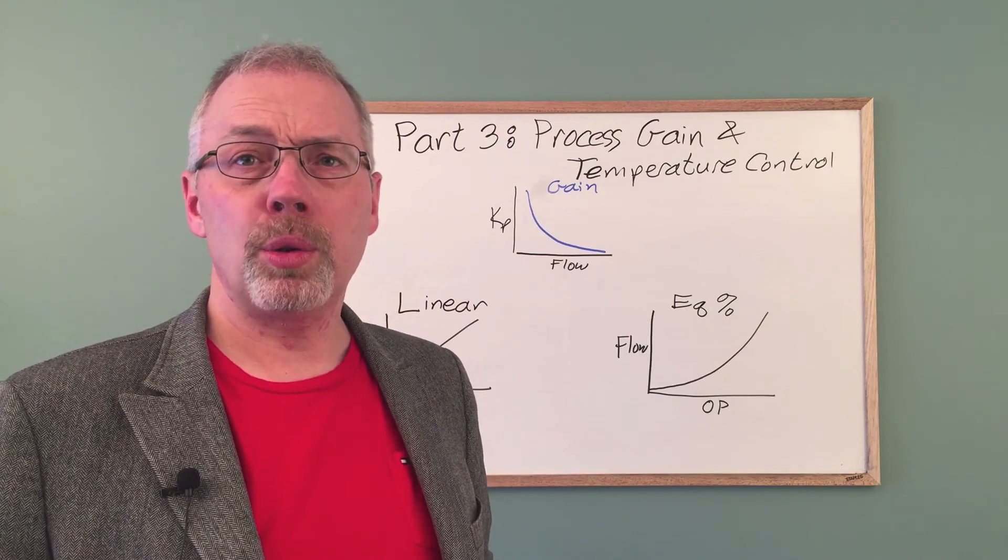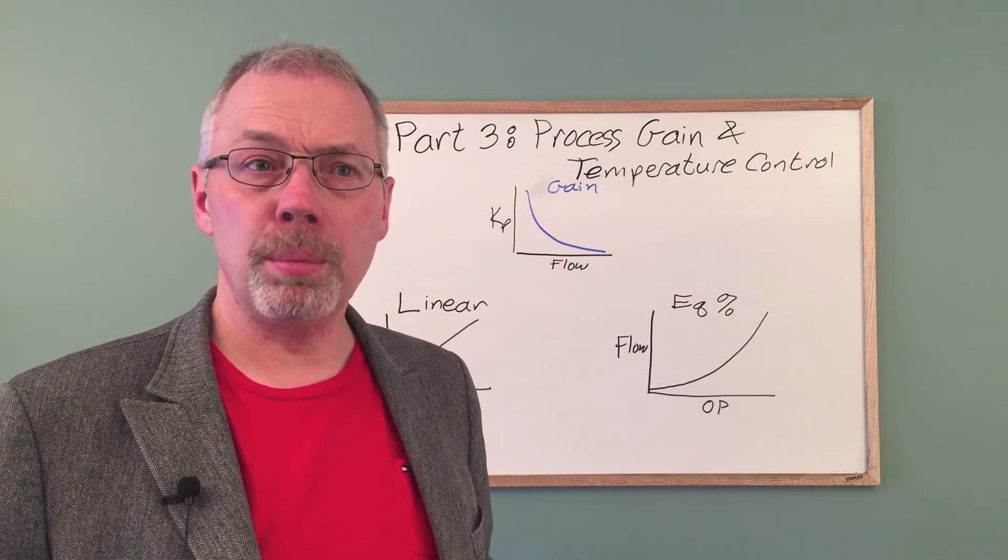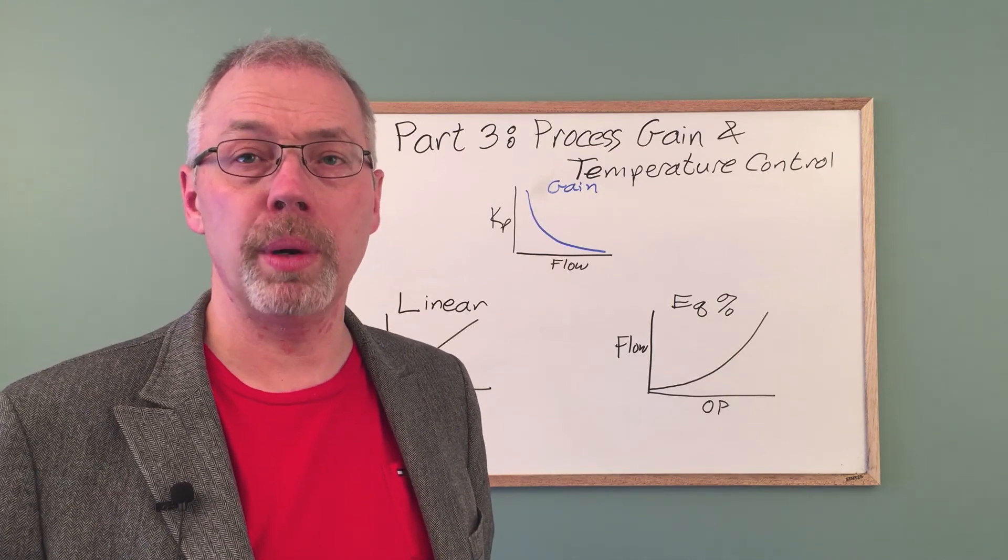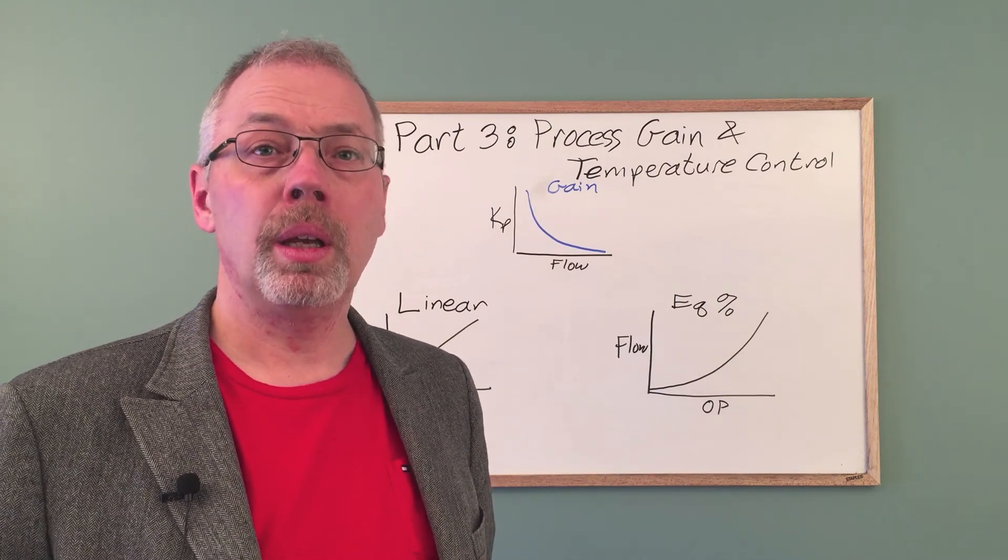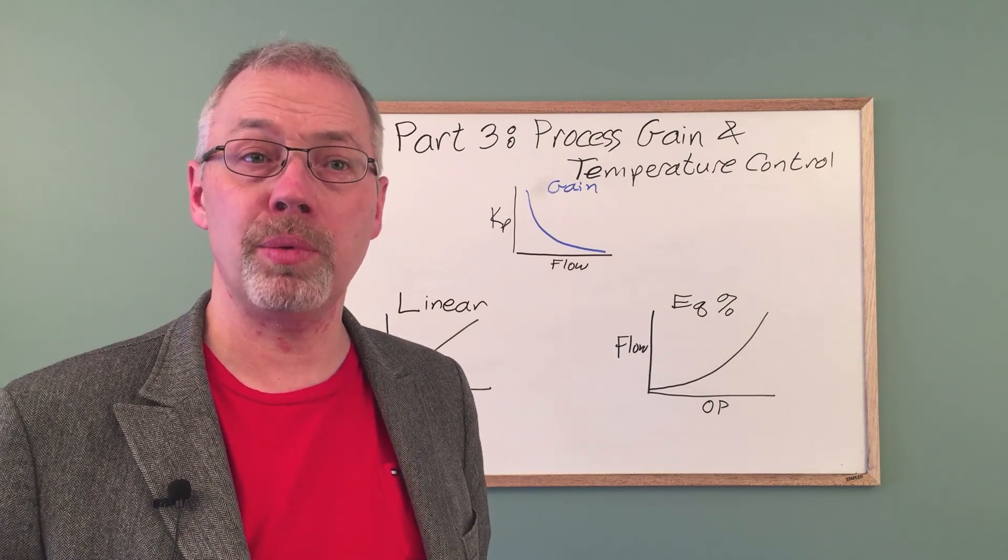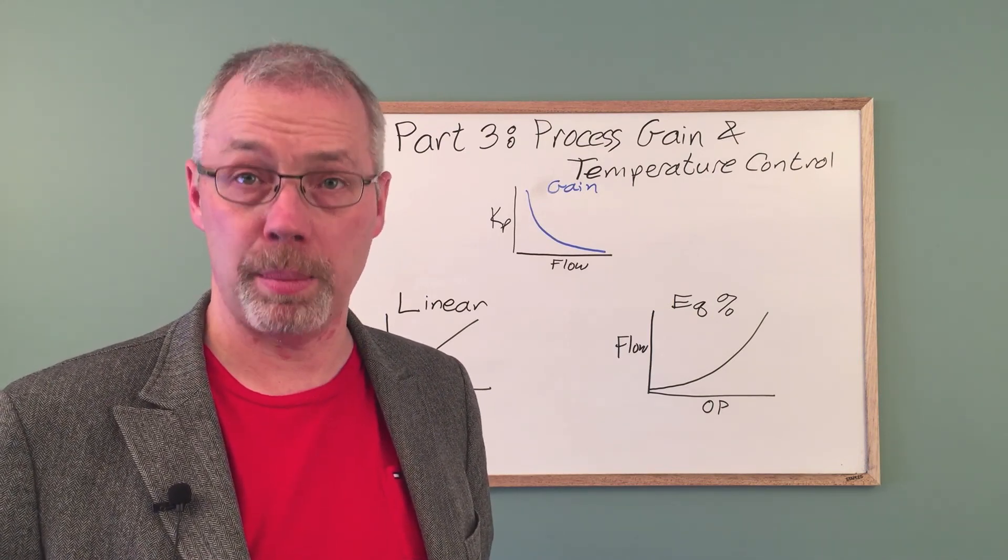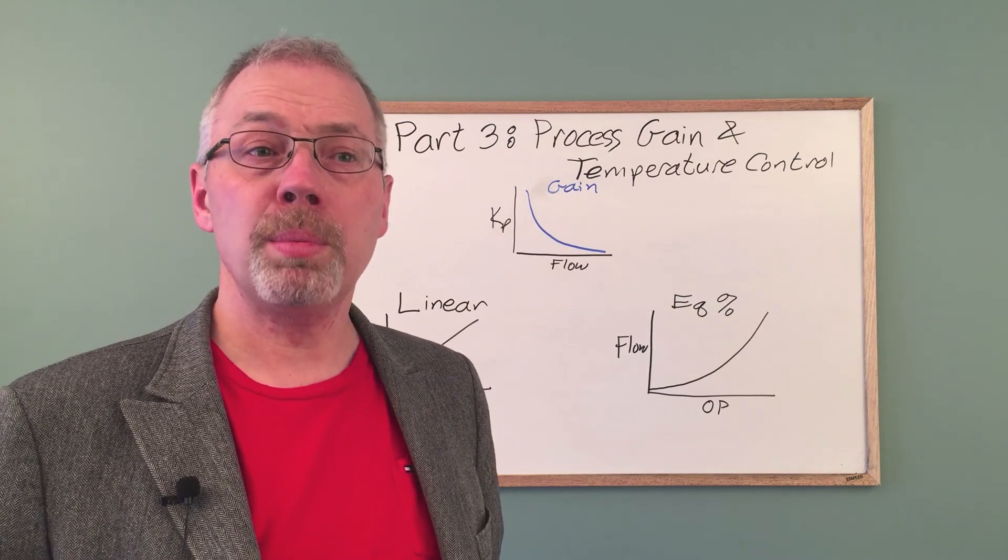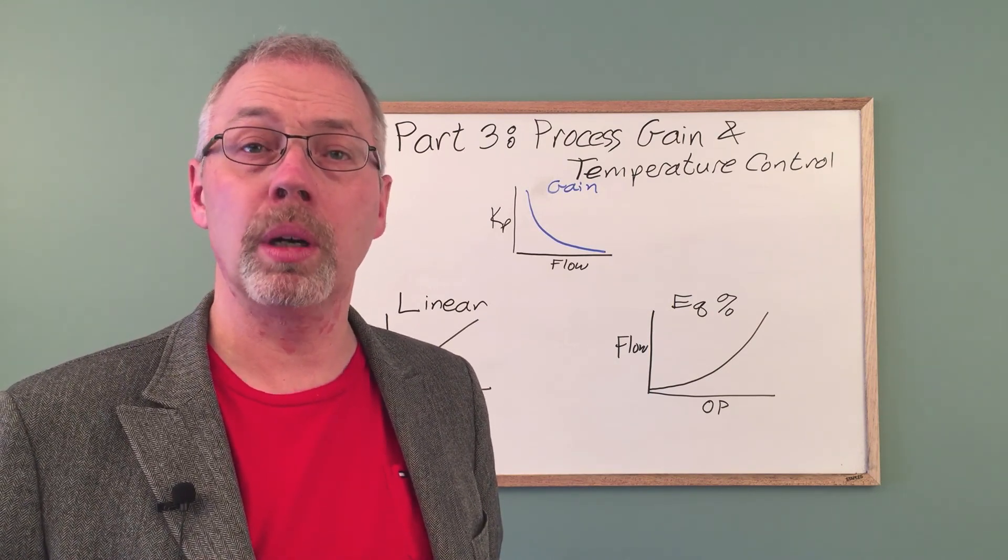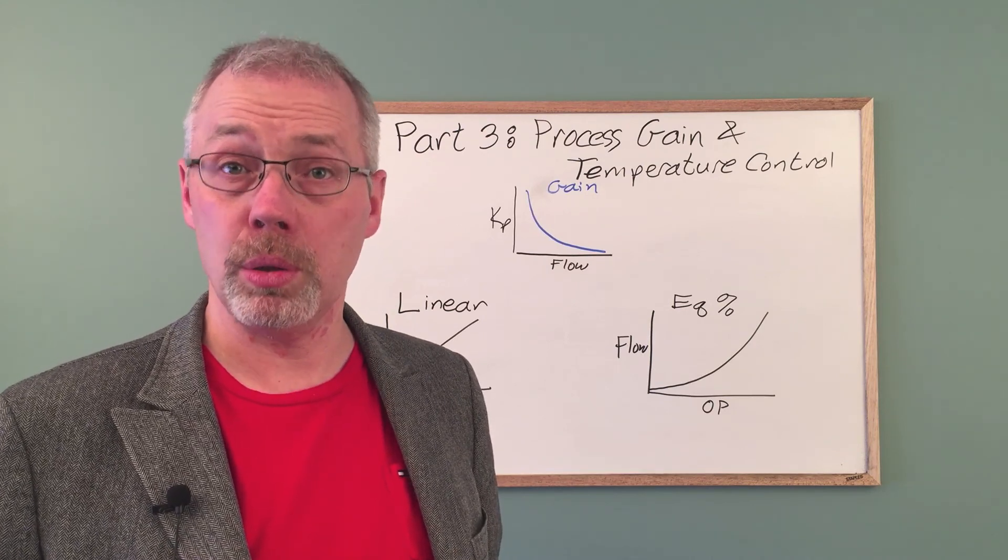We found that the choice of control valve characteristic is very important to ensure that the control system is robust over a wide range of operating conditions. An understanding of the hydraulic behavior will determine which type of trim is best suited for the application. This type of hydraulic modeling also allows us to tweak the control software where the wrong control valve is used.